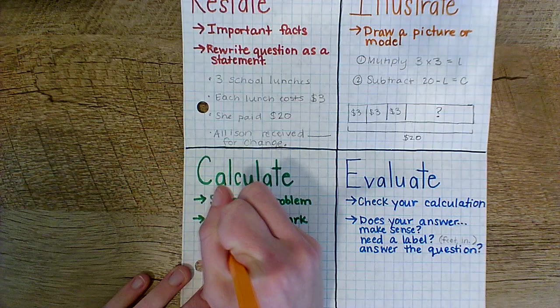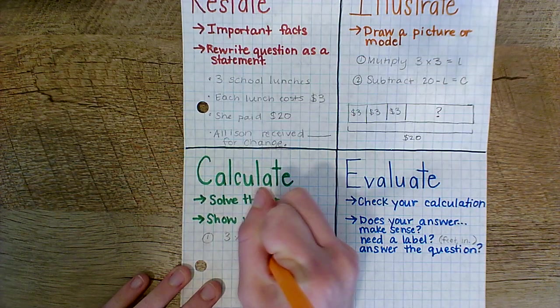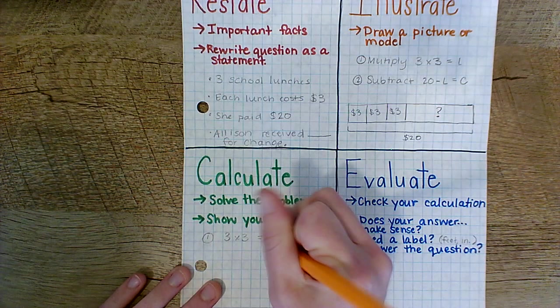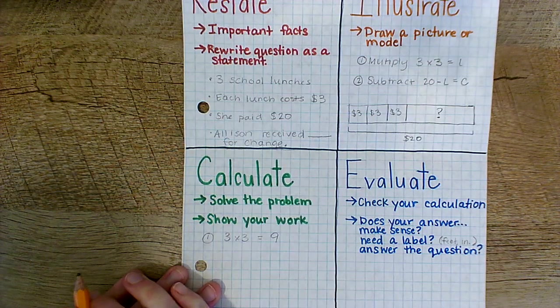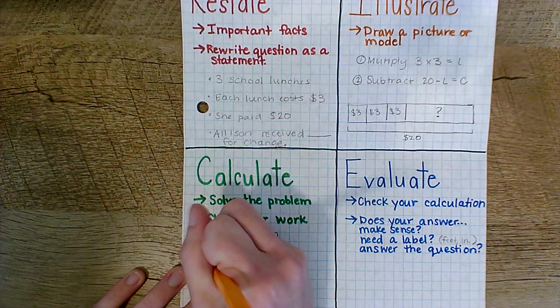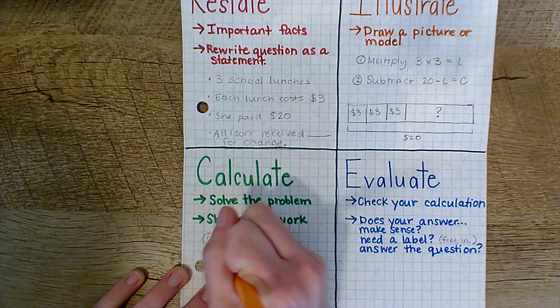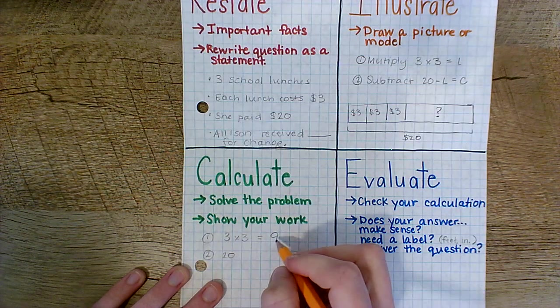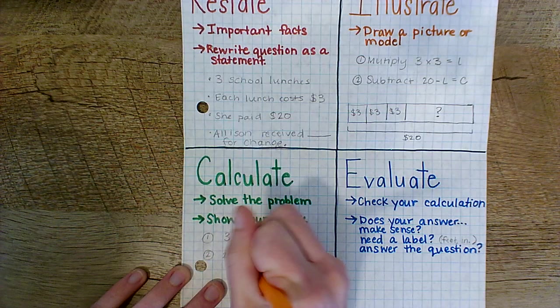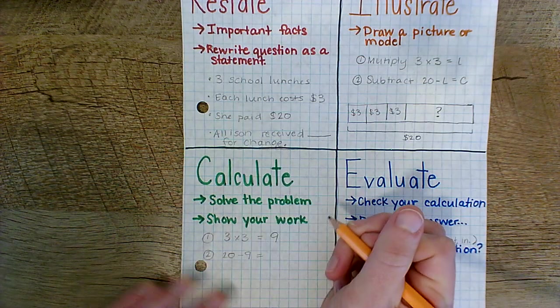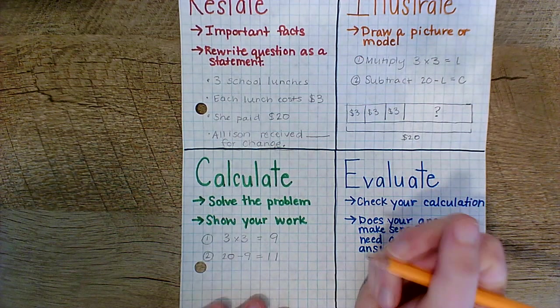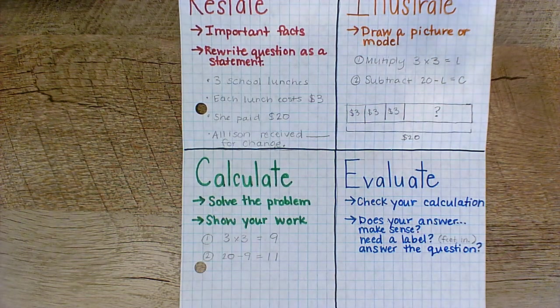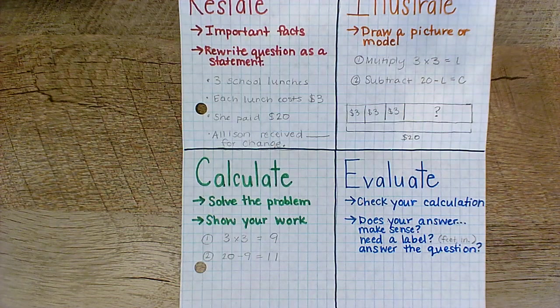I know my first step is to do three times three. I know that fact, three times three equals nine. My second step, I'm going to do twenty minus the value I had here, which was nine. And then I get eleven. Great. So now I know that she should receive eleven dollars of change.